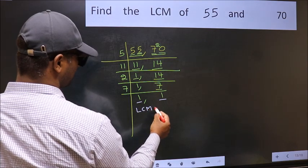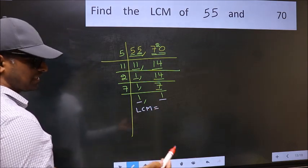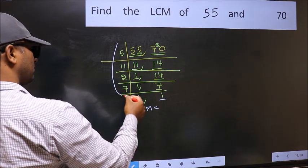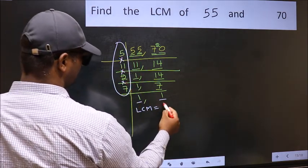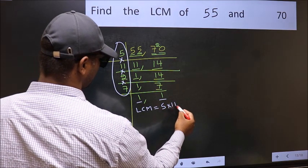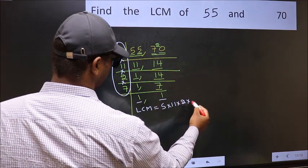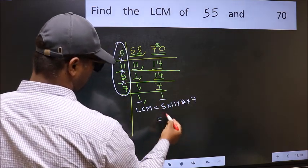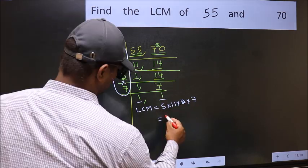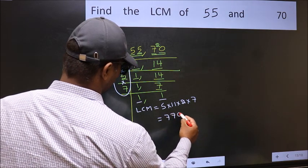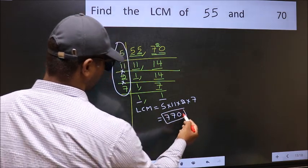So our LCM is the product of these numbers. That is 5 into 11 into 2 into 7. When we multiply these numbers, we get 770 as our LCM.